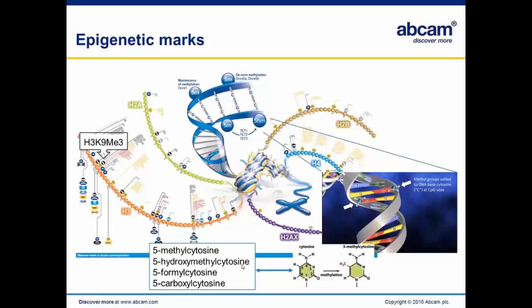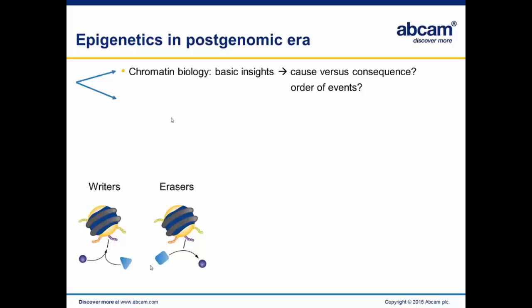The epigenetic landscape is being maintained by epigenetic enzymes called writers, which write epigenetic marks, or erasers, which can remove these epigenetic marks. We have increasing lists of these writers and erasers, and insights into basic chromatin biology are exploding in recent years. However, it is kind of difficult to address cause versus consequence of epigenetic marks with respect to, for example, gene expression in differentiated cells, and the order of events is still highly unknown.